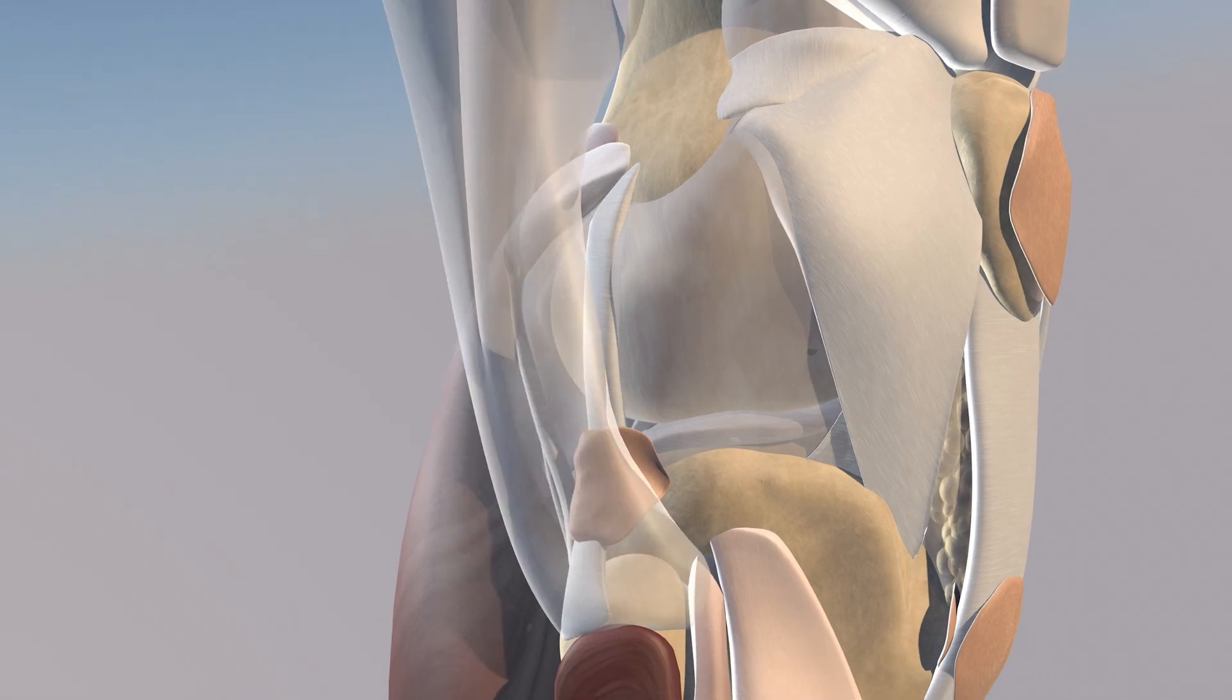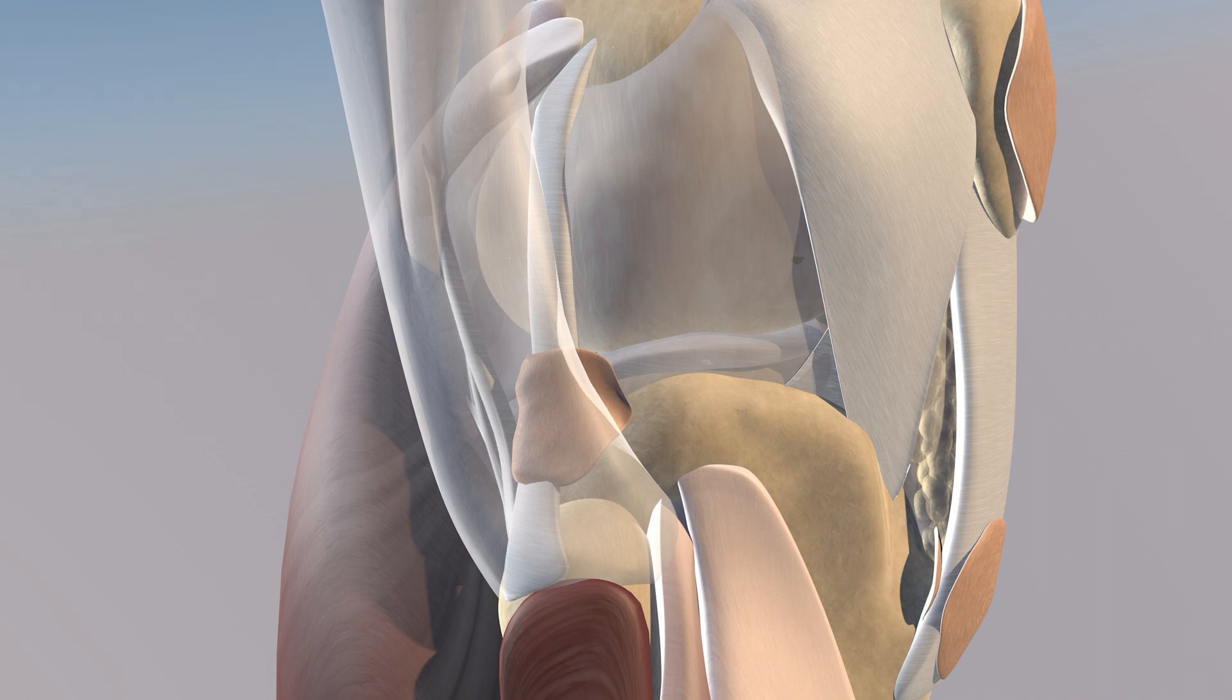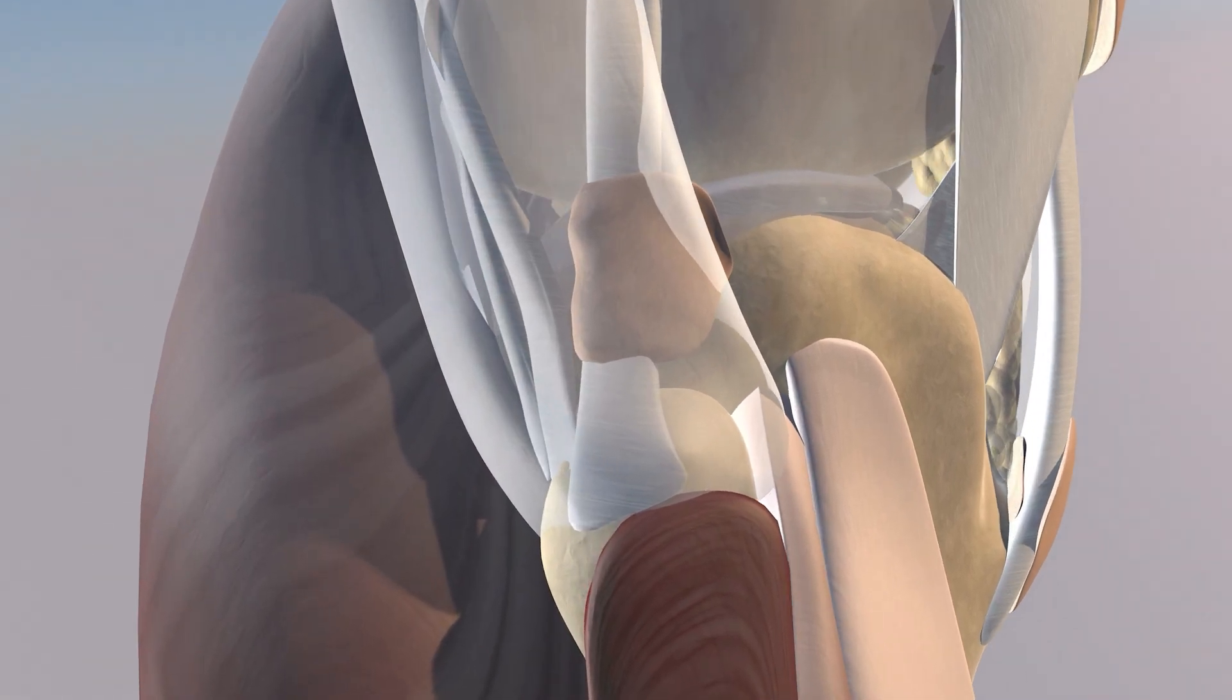Here we're looking at the lateral aspect of the knee where you can appreciate the biceps femoris tendon which we just made translucent and also that fibular collateral ligament biceps femoris bursa which you can see draping over the lateral collateral ligament.